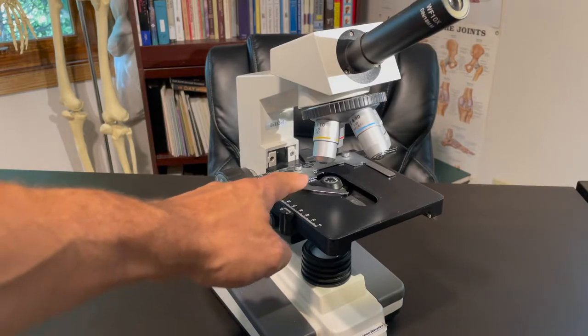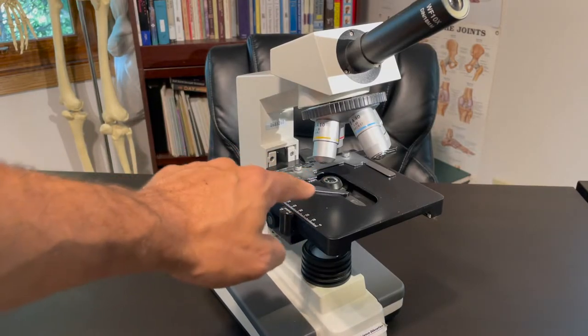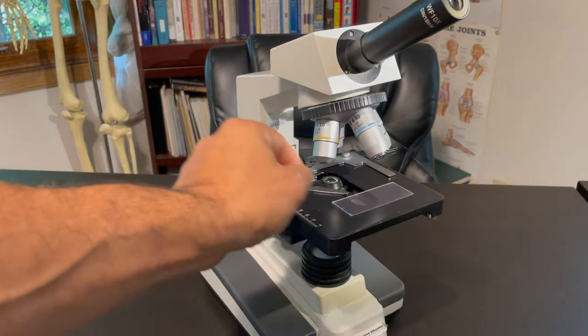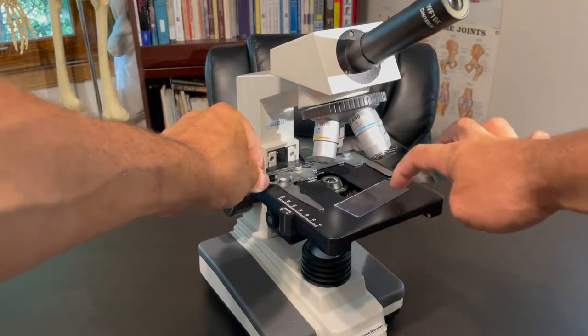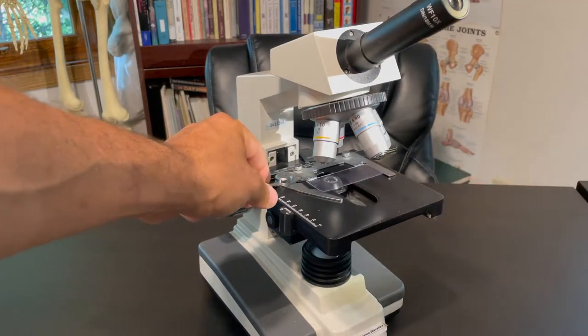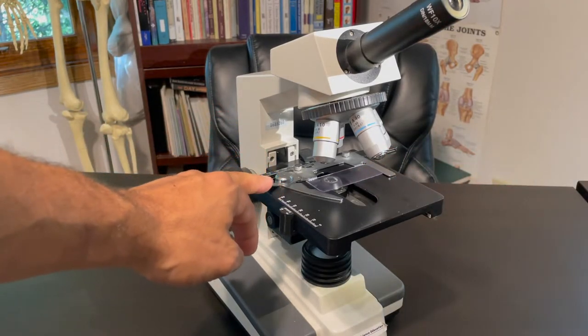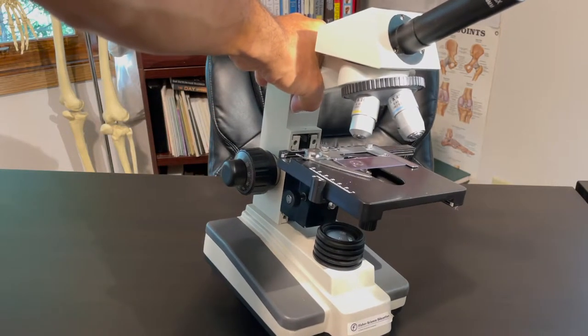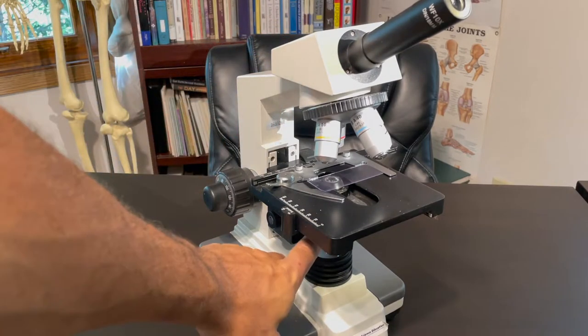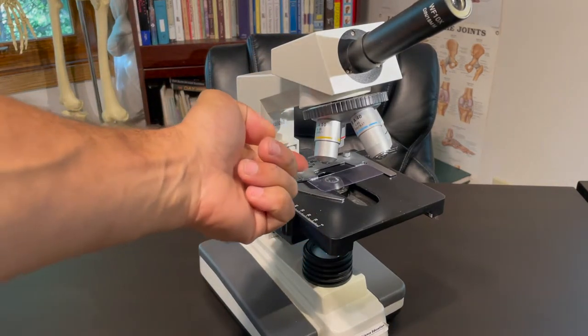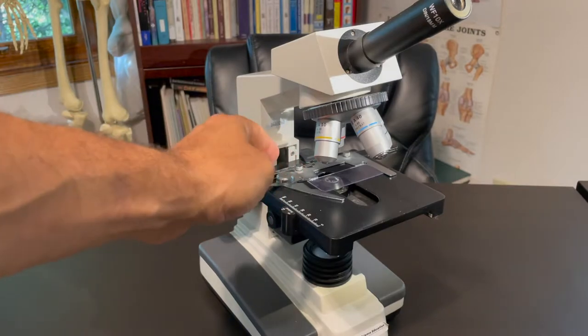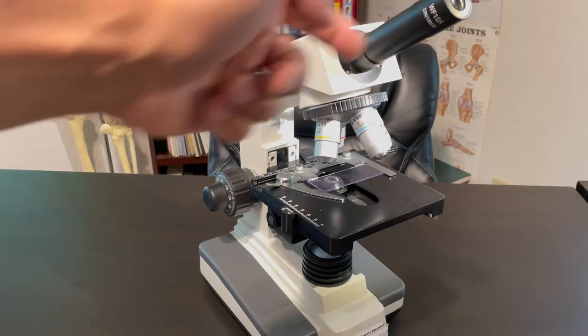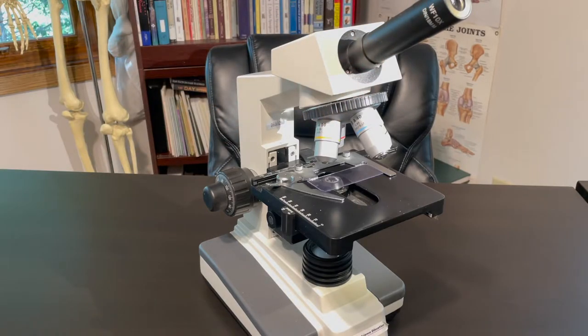You have your stage clip. This is the stage. This is the slide that you slide into and clip it in just like that. And you have your light source down here. That's what you turn on. And the light will shine right through all the way up through the diaphragm, through the stage, through the objective lens, and right through the ocular lens.